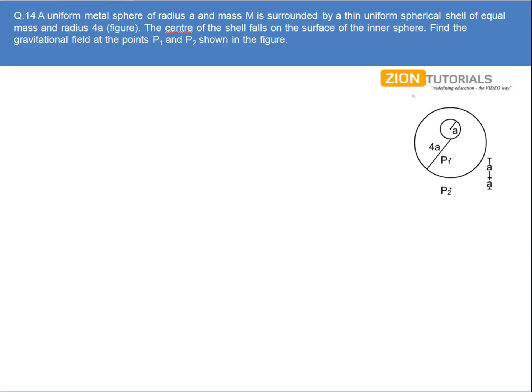I have to calculate the gravitational field at point P1 due to the outer shell as well as the inner sphere. Now, the same concept applies: if a point is lying inside a hollow sphere, then the gravitational field at that point will be zero due to that hollow sphere.